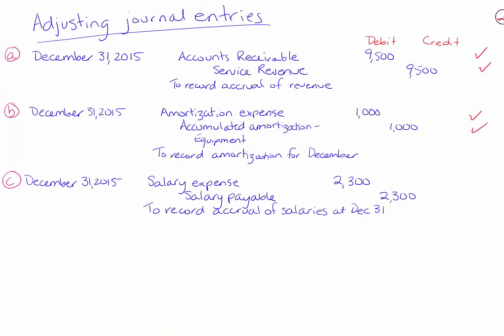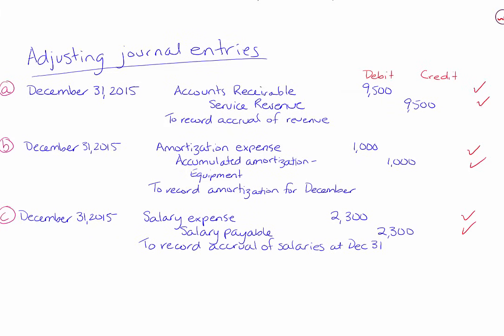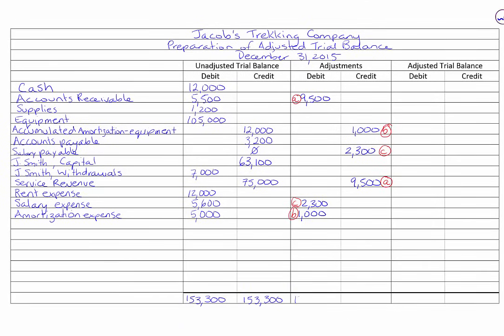Go back to your journal entries and check them off as being done. Now let's do C: debit salary expense, credit salary payable for $2,300. Go back to your adjusting entries and mark it off as being done. The next thing you're going to do is add up all the debits and add up all the credits and double check — do they balance? This ensures that we didn't make a mistake posting our journal entries to our trial balance.